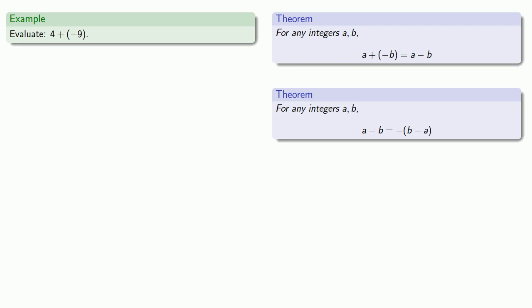Let's put our theorems together: 4 plus the additive inverse of 9. Adding an additive inverse is the same as subtracting so this is 4 minus 9, but I can't subtract 4 minus 9.